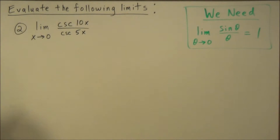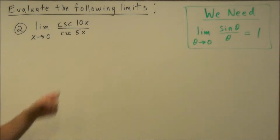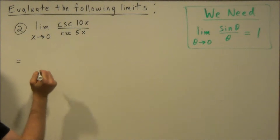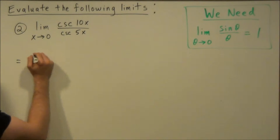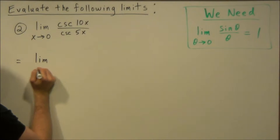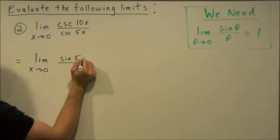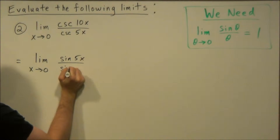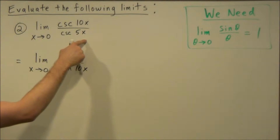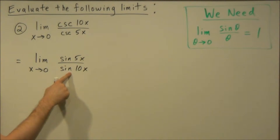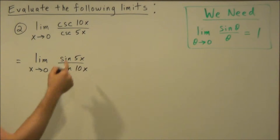For the second problem, we have the limit as x goes to zero of cosecant ten x over cosecant five x. We're going to use the definition of cosecant as the reciprocal of sine. We can rewrite this as the limit as x approaches zero of sine five x over sine ten x.